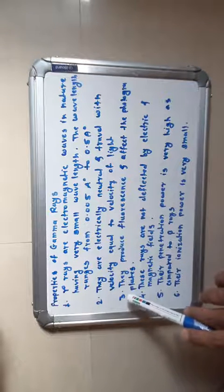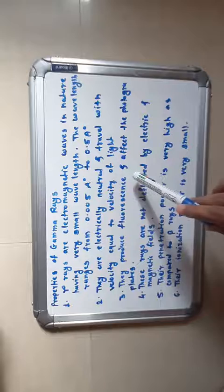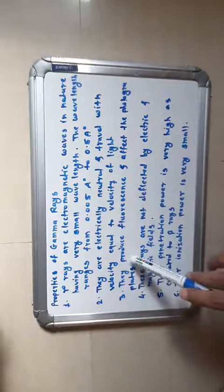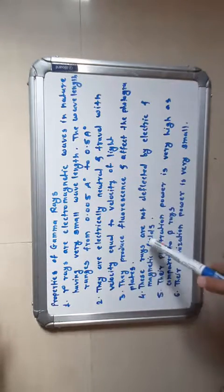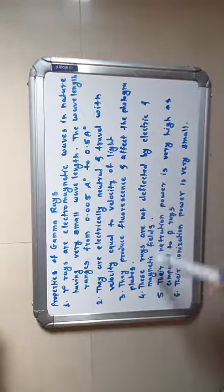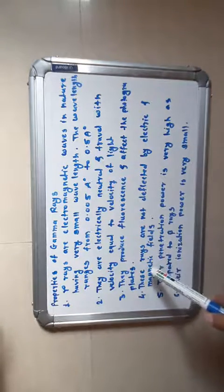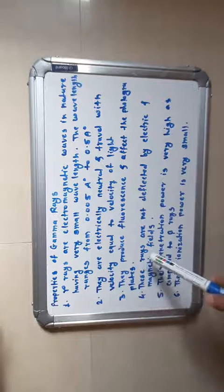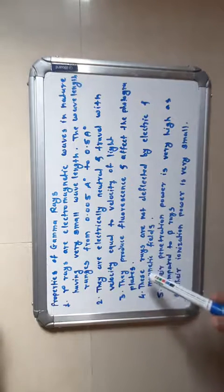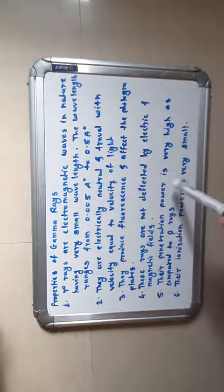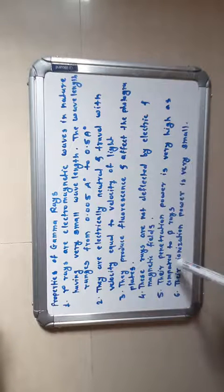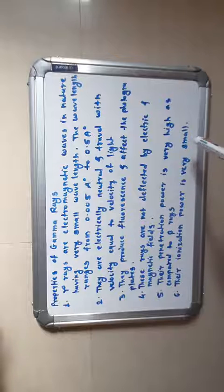Third property: gamma rays produce fluorescence and affect the photographic plate. Fourth: these rays are not deflected by electric and magnetic fields, as confirmed in the experiment. Fifth: their penetration power is very high as compared to beta rays. Sixth: their ionization power is very small.